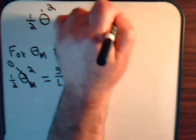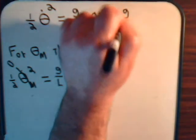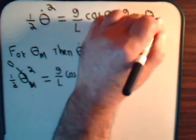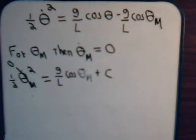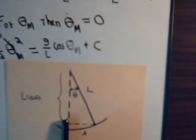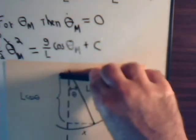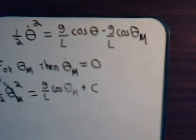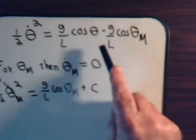So there is our pendulum equation once we've determined what the constant of integration is. Notice that if the maximum displacement was 90 degrees — all the way up to here — then the integration constant would be zero, because the cosine of pi over two is zero. But for anything else, we're going to have this term.